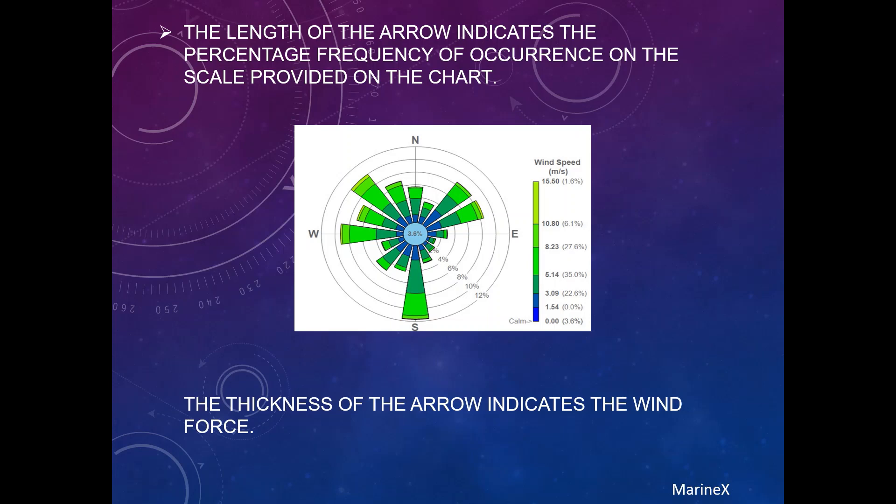The length of the arrow indicates the percentage frequency of occurrence on the scale provided on the chart. The thickness of the arrow indicates the wind force.